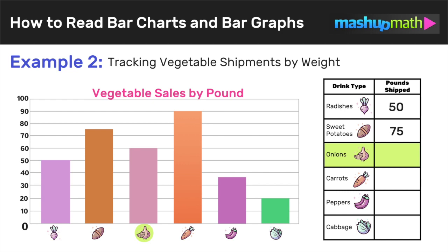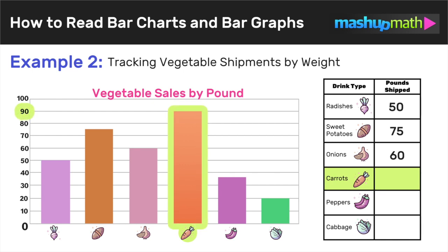For onions, the bar stops at 60, so we conclude that 60 pounds of onions were shipped. Moving on to carrots — the highest bar on the graph — it goes all the way up to 90, so we conclude that 90 pounds of carrots were shipped.